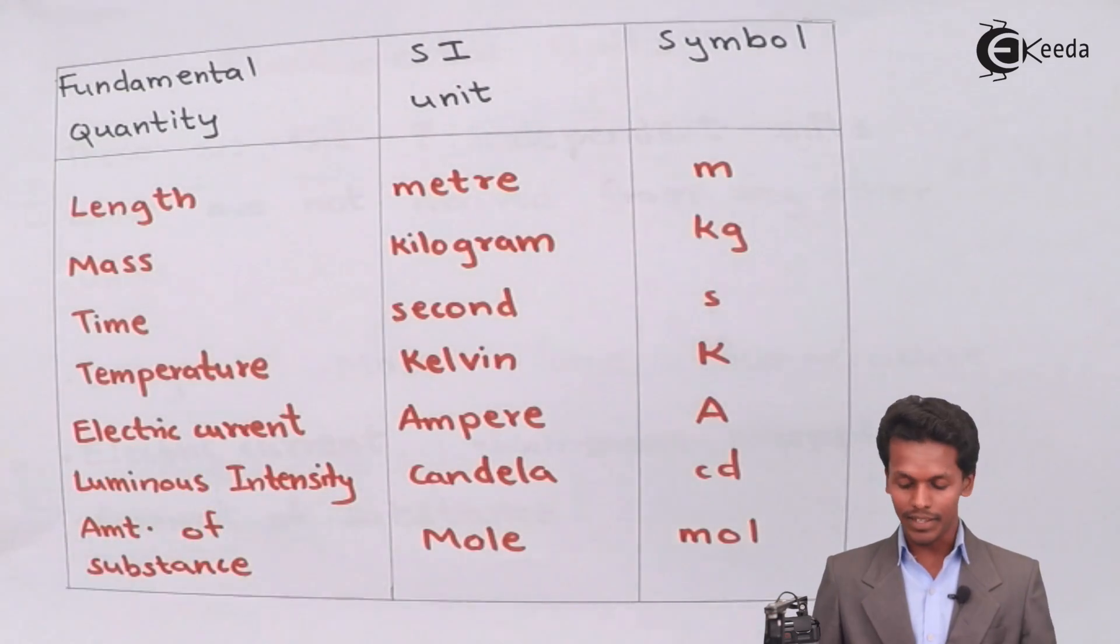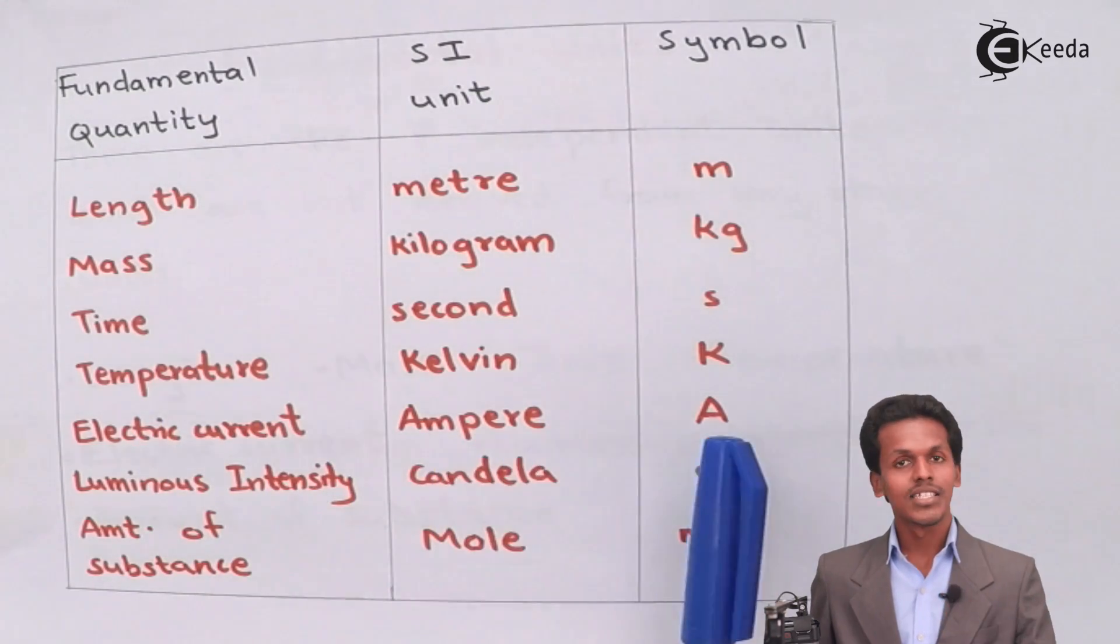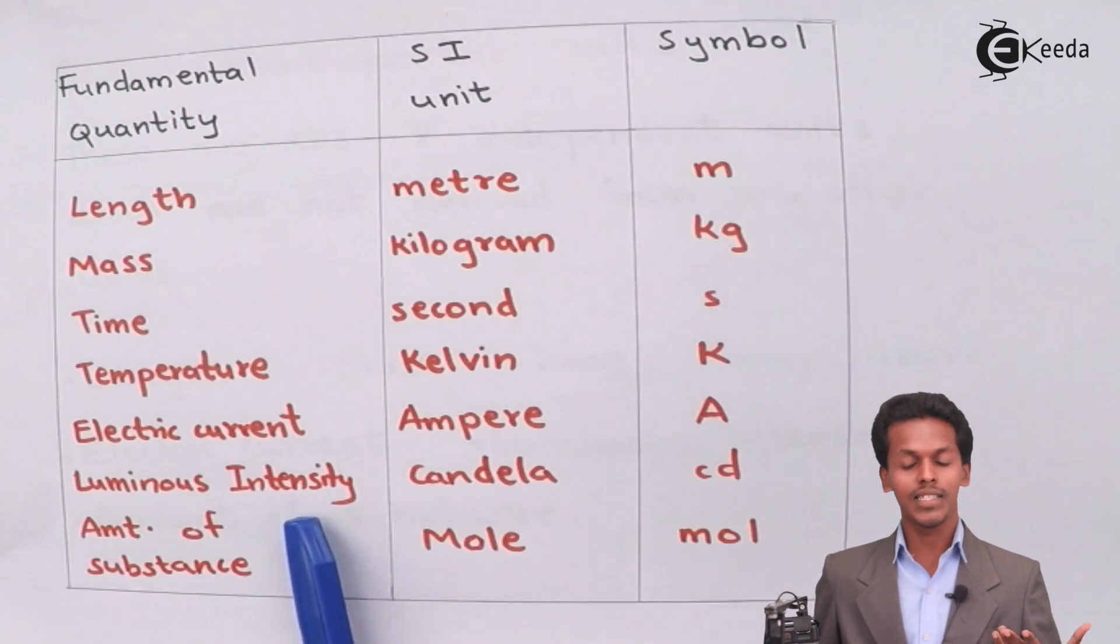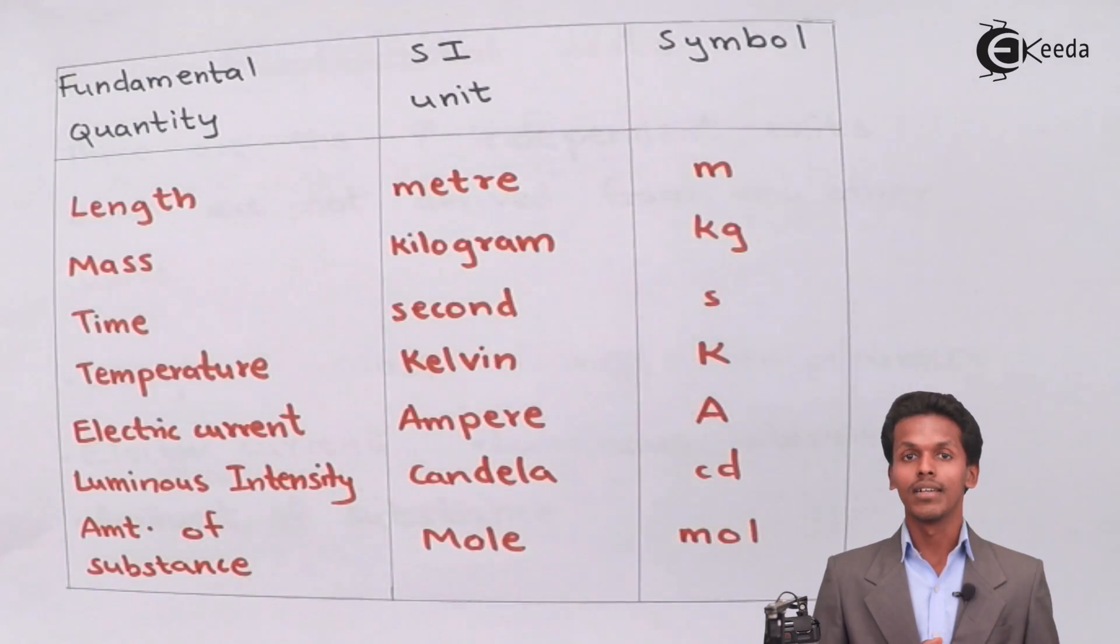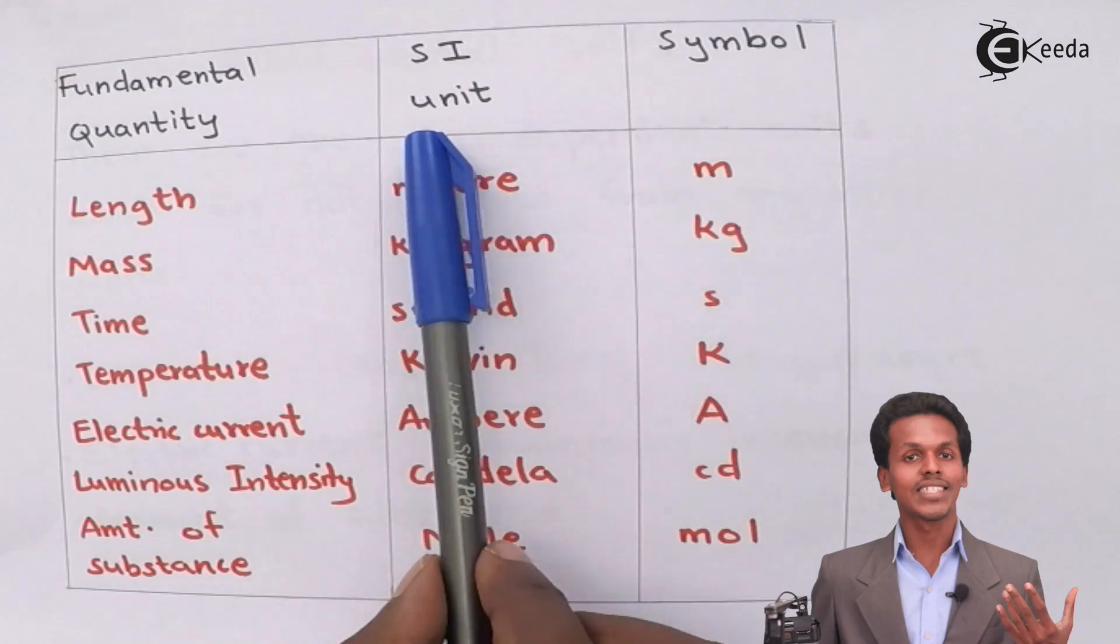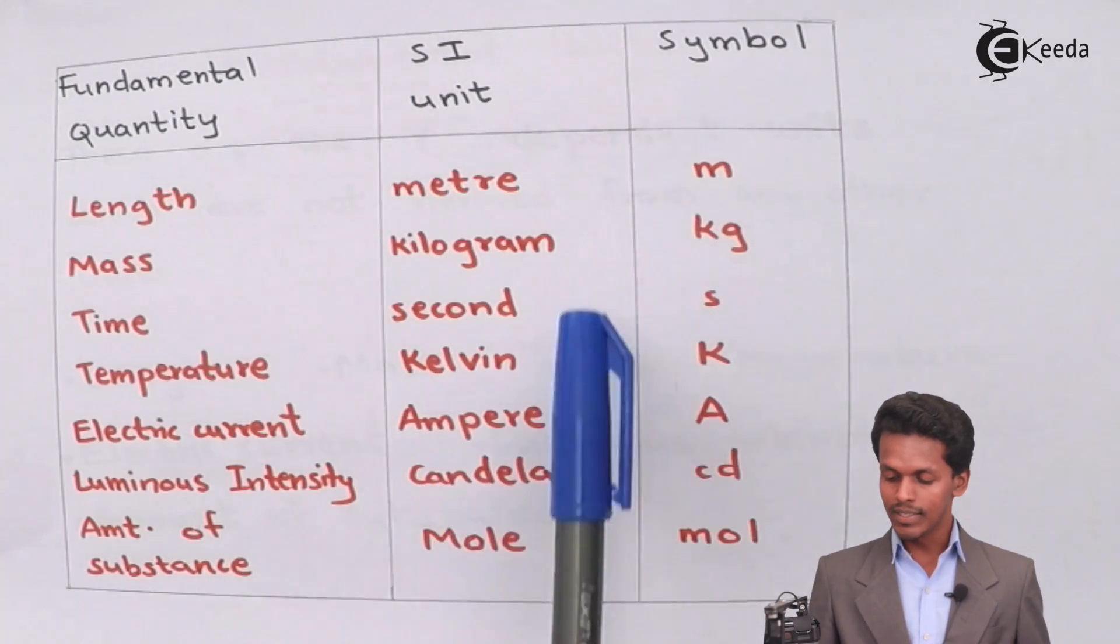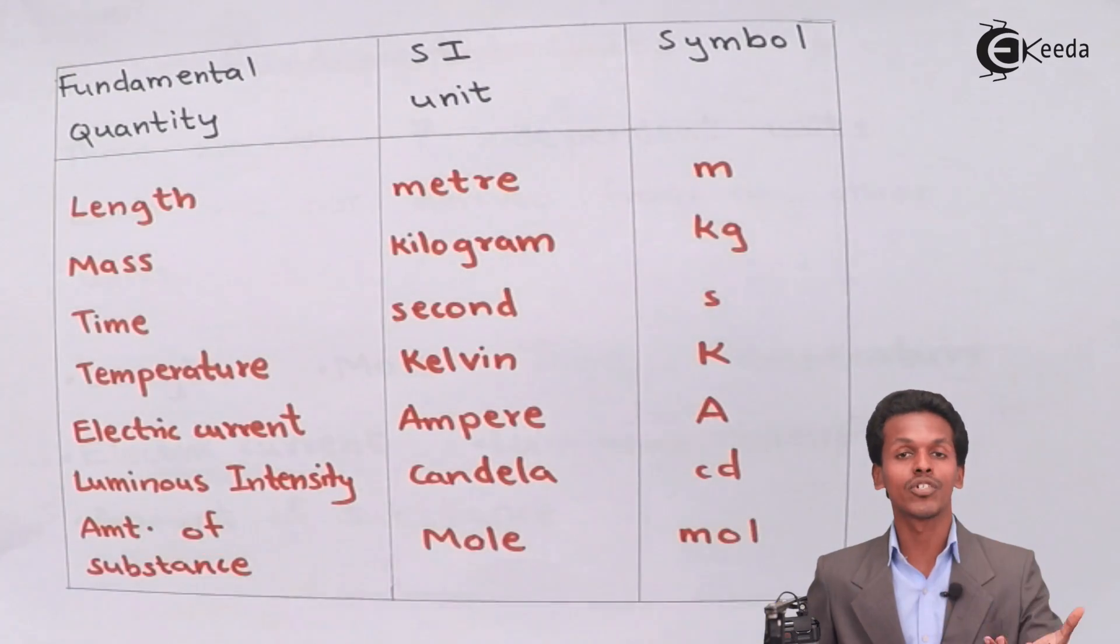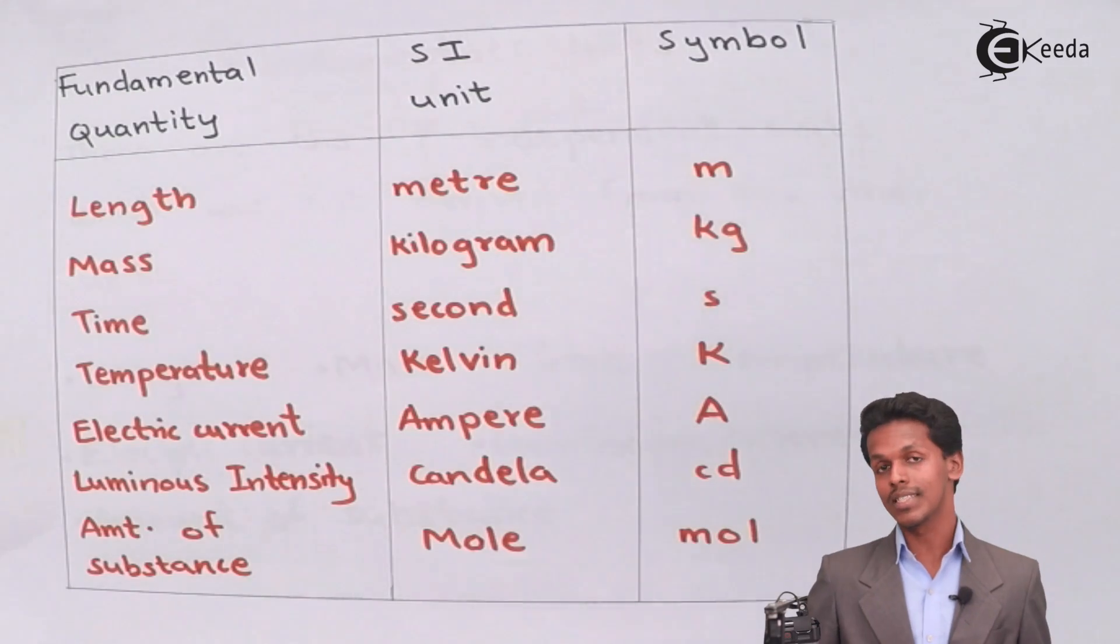Now let us talk about the electric current. Electric current is given the SI unit as ampere and the symbol is capital A. Luminous intensity is given the SI unit of candela and that has been symbolized as cd, both alphabets small. Talking about the amount of substance, it has SI unit of mole and what is mole we are going to study in the future. The symbol is mol and we don't write it as mole because this is the symbol that is being mentioned towards the mole.